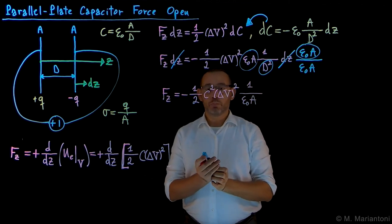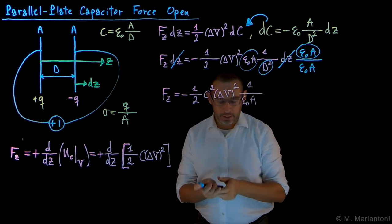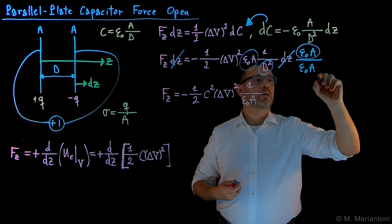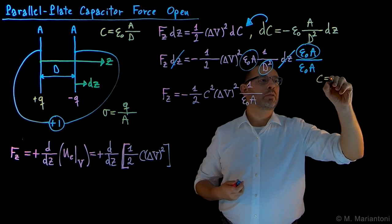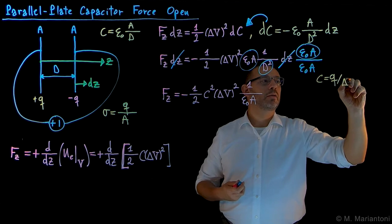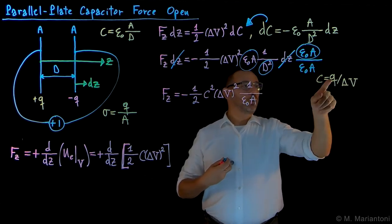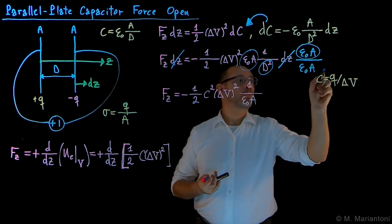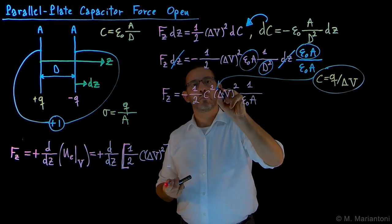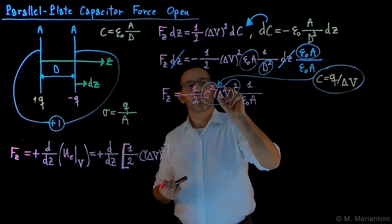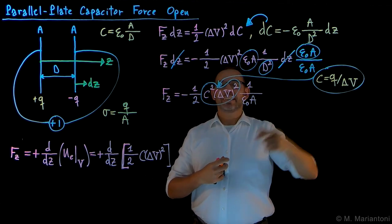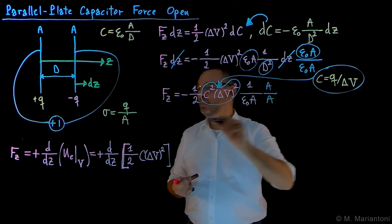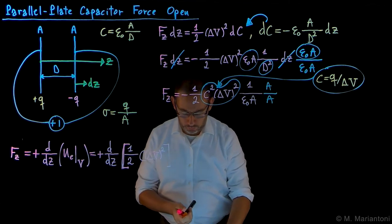Now the next thing we want to do, we want to remember our definition of capacitance in general. I remind you that C is Q divided by delta V. Therefore Q is C delta V. C squared delta V squared is nothing but Q squared. So I'm using this. Then let us multiply and divide by A so we can use this equation as well, Q over A.